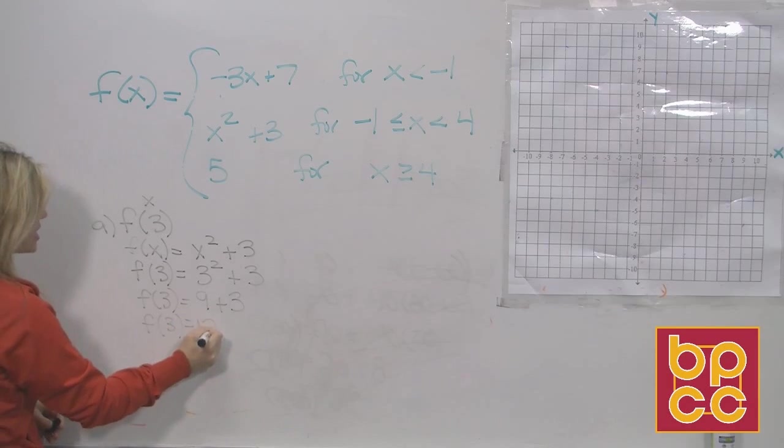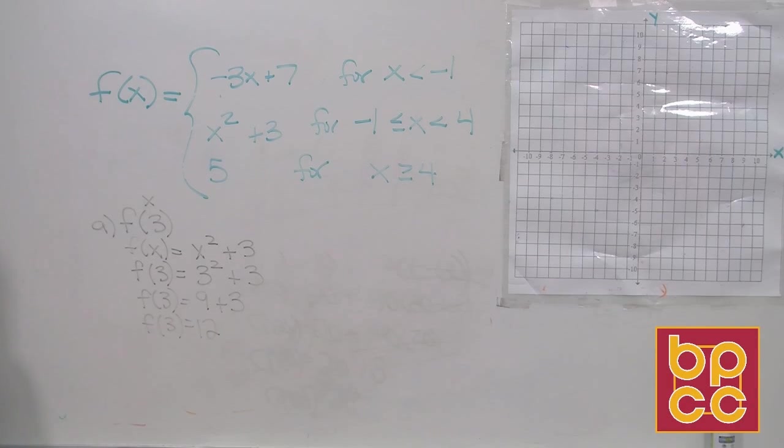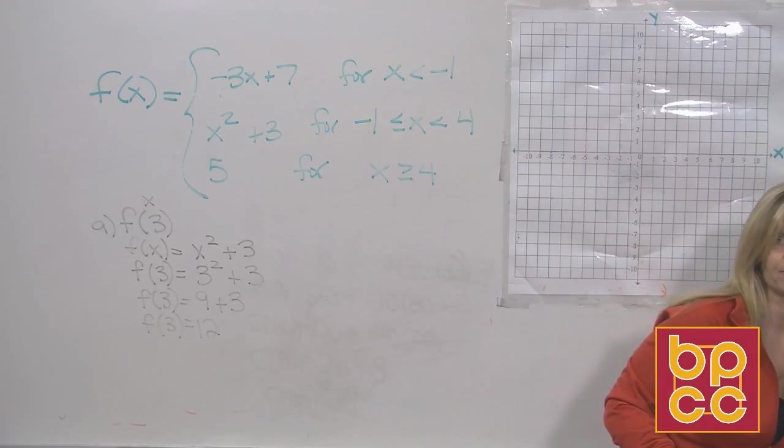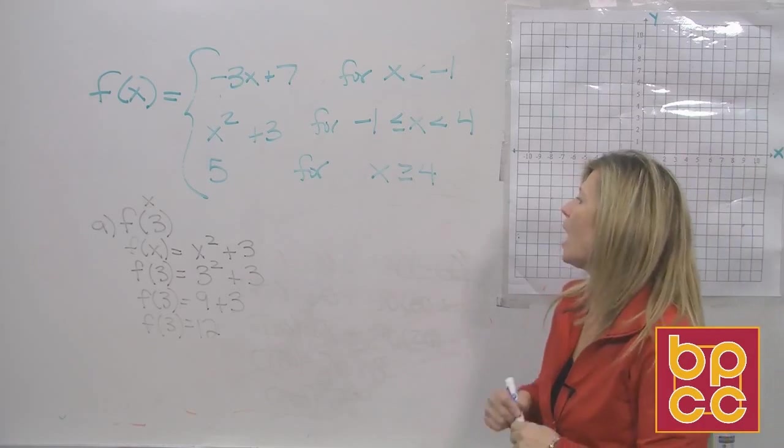What you guys have done is you've made an ordered pair. I've given you x, the domain. You've gotten out y, the range. You've made a point on that function, that piece. So far so good? Alright, let's try the next one.